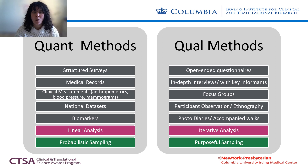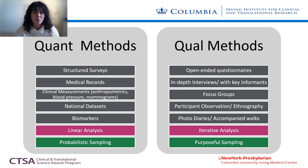Quantitative and qualitative data collection and analysis also differ. First, quantitative methods gather numerical data, typically from close-ended and structured questionnaires, publicly available data sources, clinical records, or biological measurements. Whereas sources of qualitative information include text and images coming from documents, transcriptions, or field notes derived from in-depth interviews, focus groups, or participant observations.